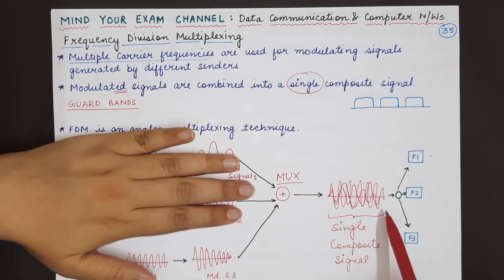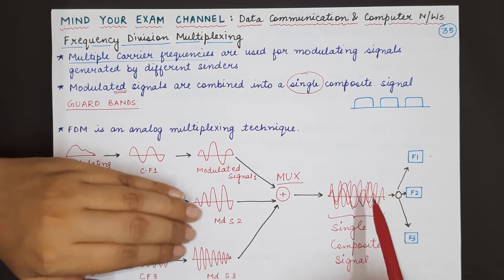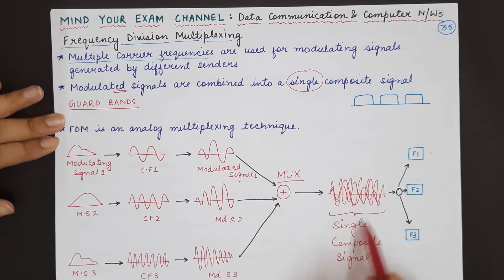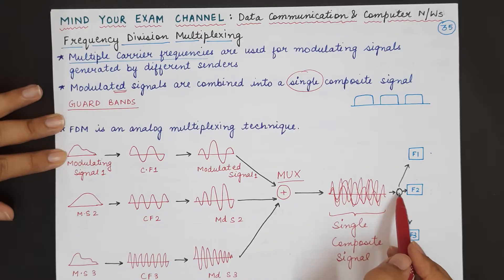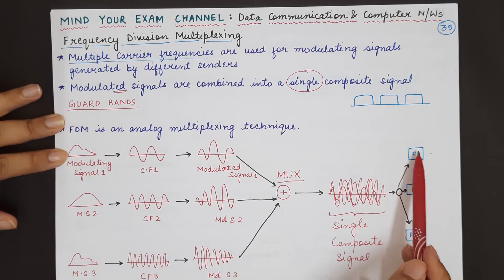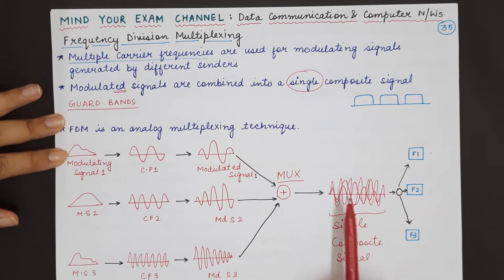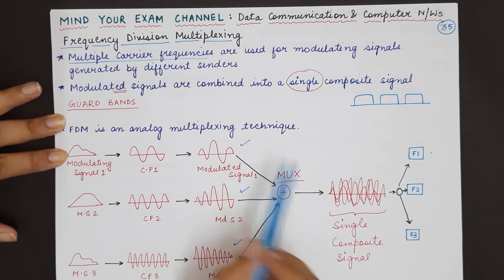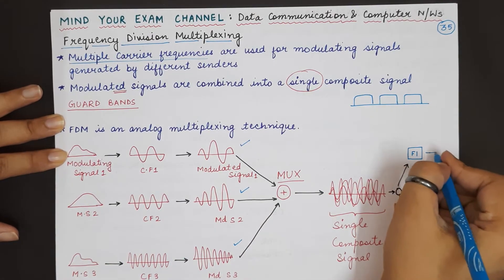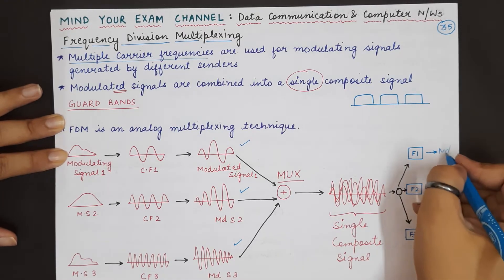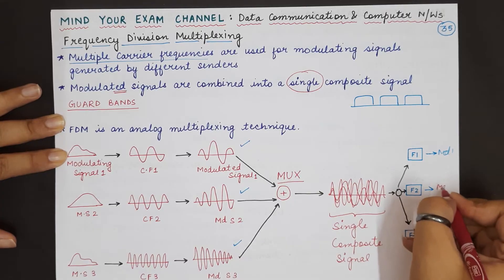This signal will then be transmitted over the link, and all this process was happening at the sender end. This is the resulting composite signal which is sent on the link. Now at the receiver end, firstly there will be three filters — why three? Because there were three original signals. The role of filters is to separate the modulated signals from this composite signal. So the filters will give you three different modulated signals. Please be careful — the filters will not give you original signals; the filters will give you modulated signals. This was MD1, this was MD2, and this will be MD3.